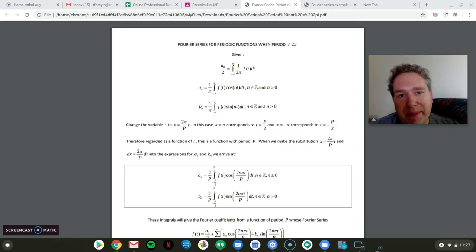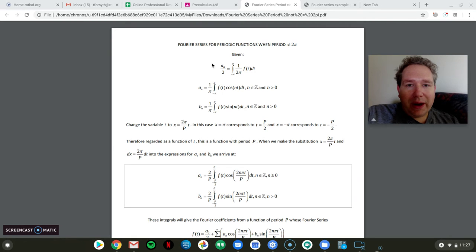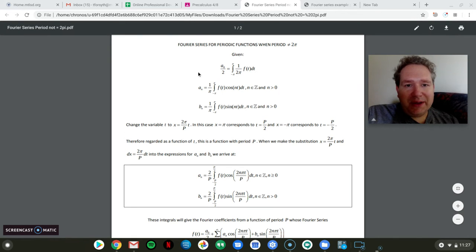The formulas don't really become that different, and it just really requires a change of variable to see what happens. So what I have on this handout here, these are the three formulas that we derive to calculate the coefficients for the Fourier series.